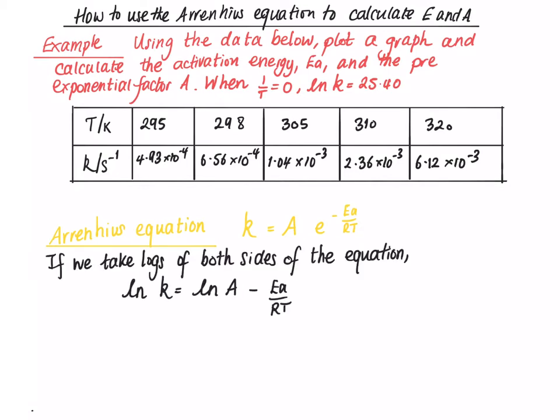If you take logs of both sides of the equation, you get ln k is ln A minus Ea divided by RT, which means you can plot this on a graph of the form Y equals MX plus C, where Y is ln k, C is ln A, the pre-exponential factor we're trying to find, and MX is Ea divided by RT.